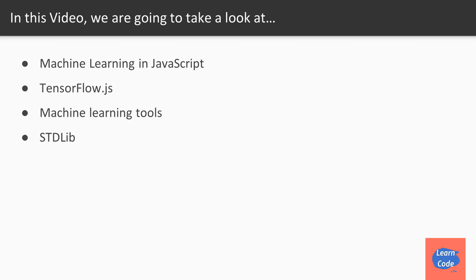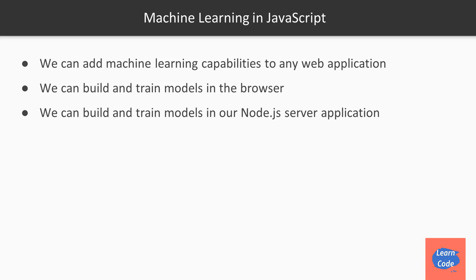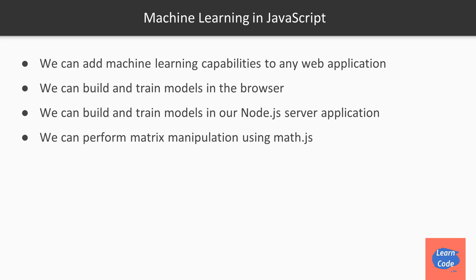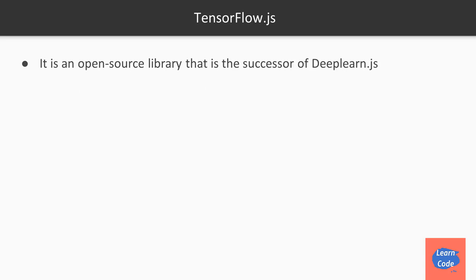Some advantages of using machine learning in JavaScript: we can add ML capabilities to any web application, build and train models inside the browser itself, or if the load gets too heavy, build and train models in a Node.js server application. We can perform fast matrix multiplication using the math.js library, which has optimized most matrix operations. There are also many libraries being added to JavaScript for machine learning.